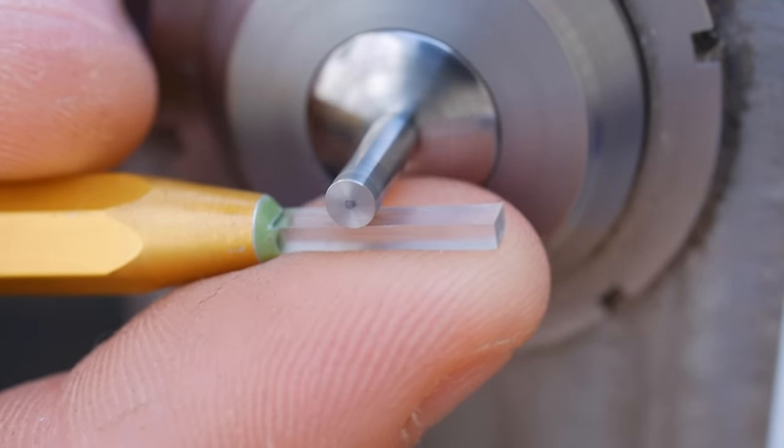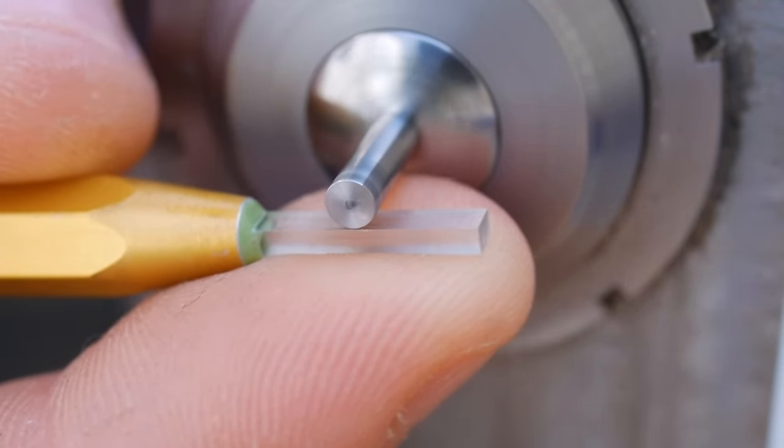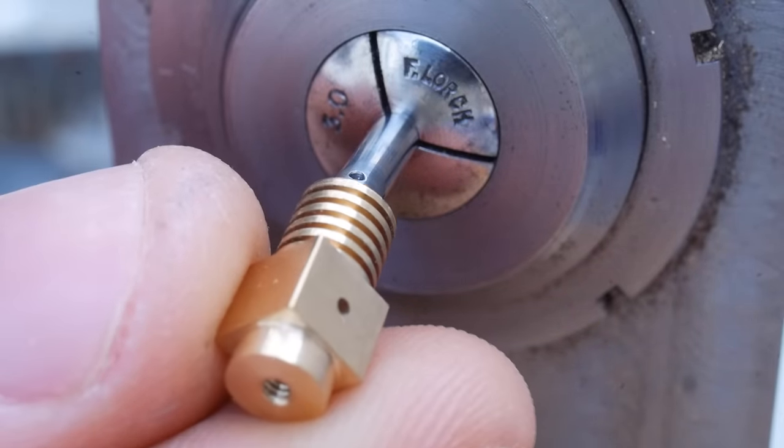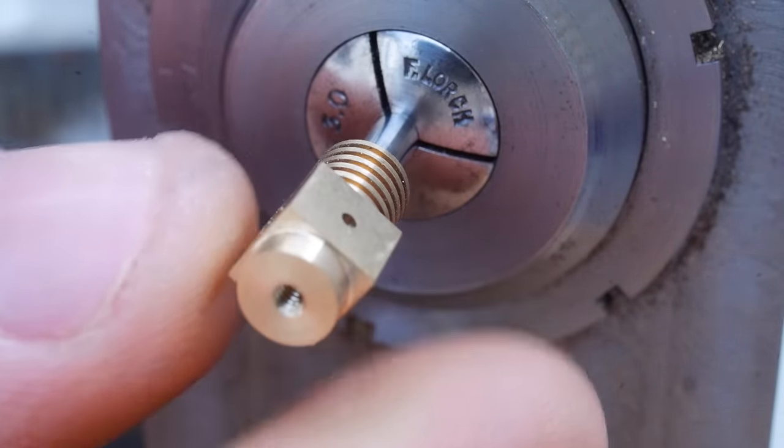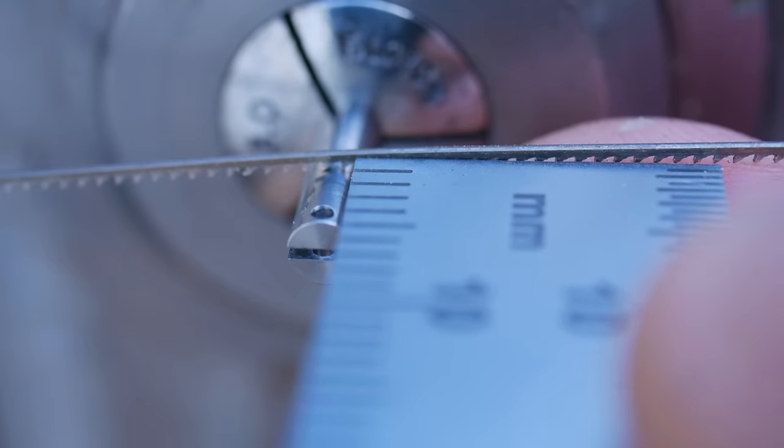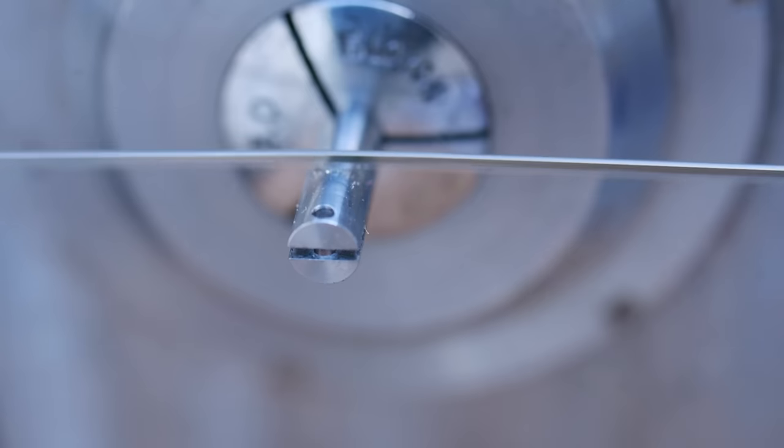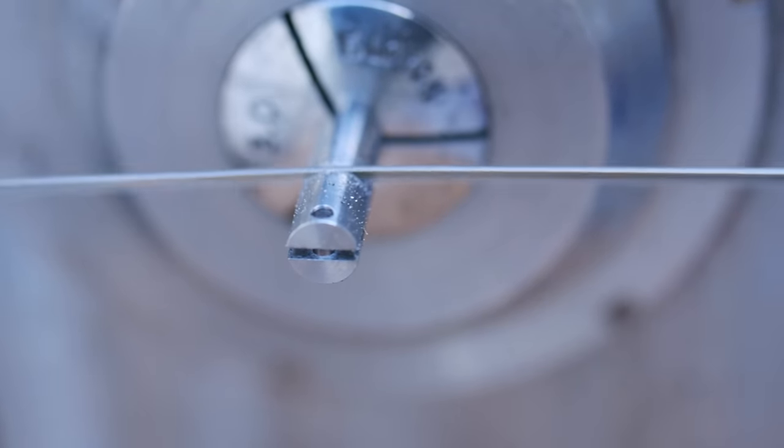To polish the surface and remove any burrs I use a sapphire burnishing tool. This also work hardens the surface of the material. I cut the piston slightly over length and then face off the sawn end.